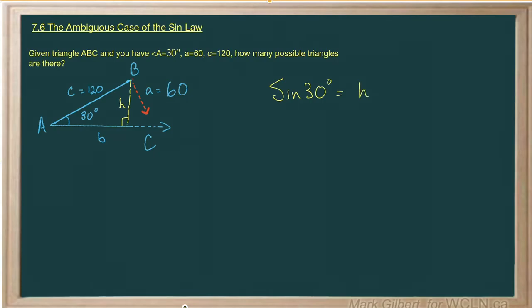The sine of 30 is equal to the opposite side, h, over the hypotenuse of 120. Let's multiply both sides by 120, and h ends up being 60.